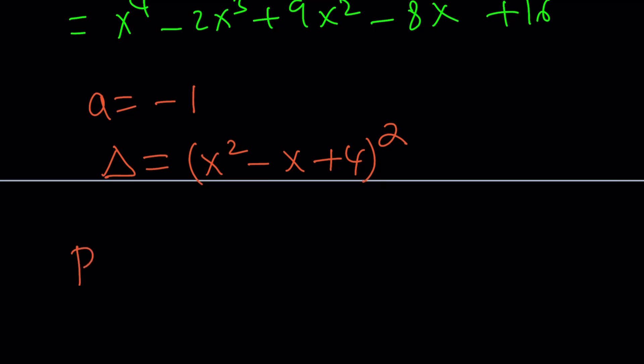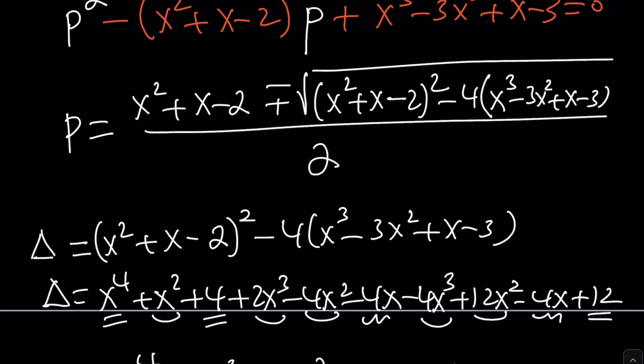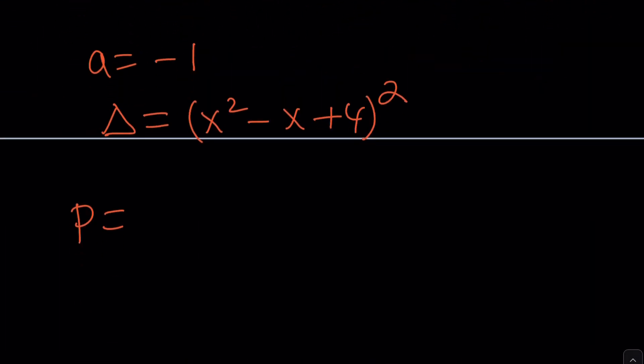So this is our discriminant - it's a perfect square, and that is perfect because we can just plug it in. Let's do it. What was our P equal to? P is equal to x² + x - 2 plus-minus the square root of delta, but it's just going to be without the square, right? Because we're square-rooting a square. Divide by 2. Easy, right?